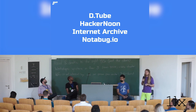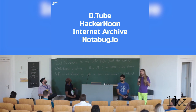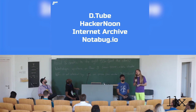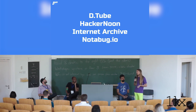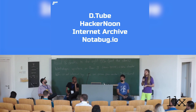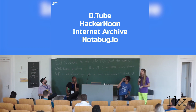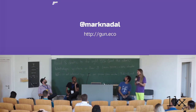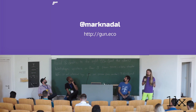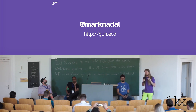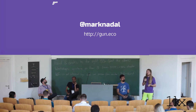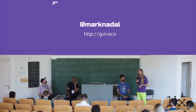The main decentralized apps built on top of us include DTube, a decentralized version of YouTube; Hacker Noon, which just came on board a month ago as they moved off of medium.com; Internet Archive, which is decentralizing their library on top of GUN; and the peer-to-peer Reddit. We're also considering building a layer two blockchain where layer one is our decentralized database and we add a blockchain on top — not underneath. We're probably going to try doing that by next year.